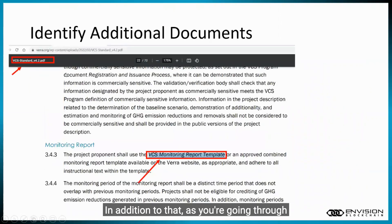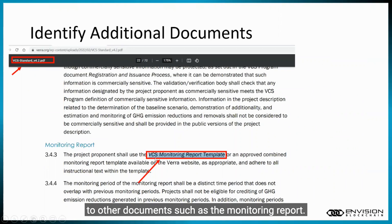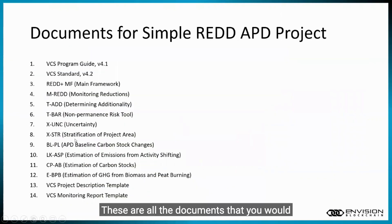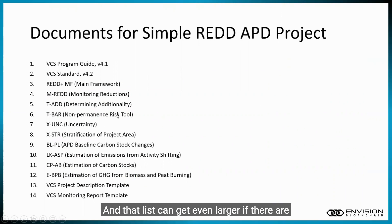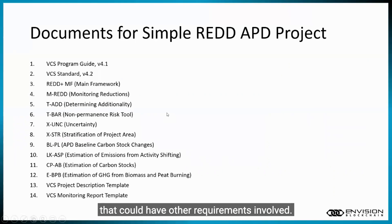In addition to that, as you're going through documents such as the main standard, it can refer to other documents such as the monitoring report. You're going to take notes of those as well. These are all the documents that you would need to review for a simple REDD APD project, and that list can get even larger if there are other project activities or contextual things that could have other requirements involved.